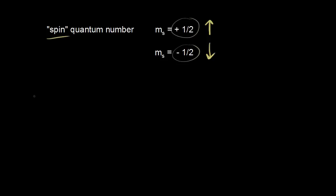Let's say we have two electrons and each has spin up. An electron is a moving charge, and moving charges produce magnetic fields, so an electron is really just a tiny magnet. When you have two electrons with parallel spins, the magnetic fields of those electrons add together. We call this situation paramagnetic.